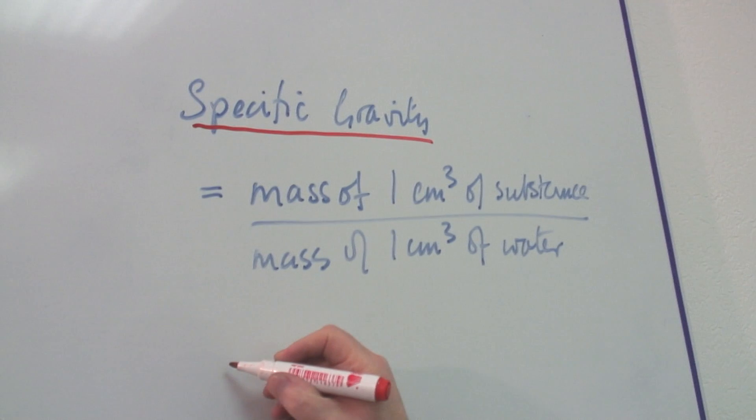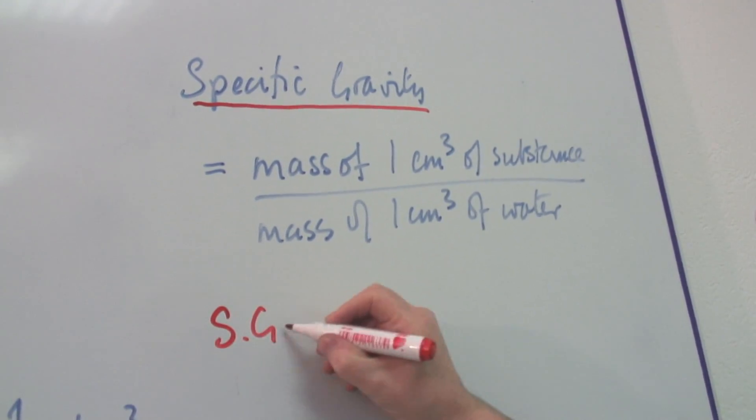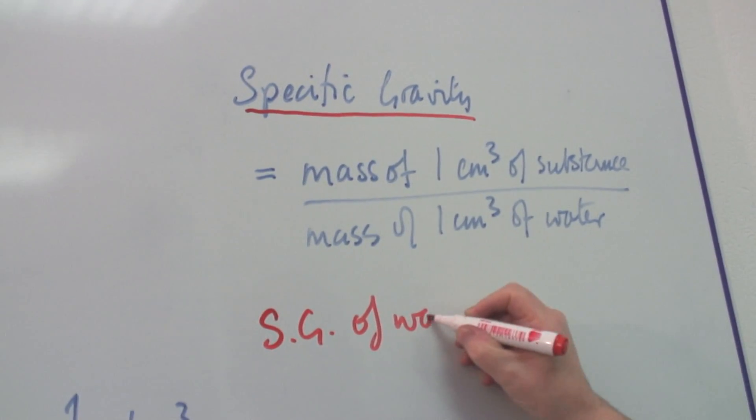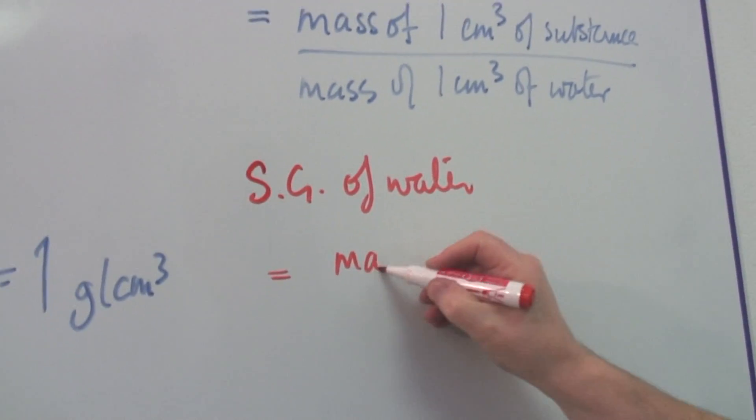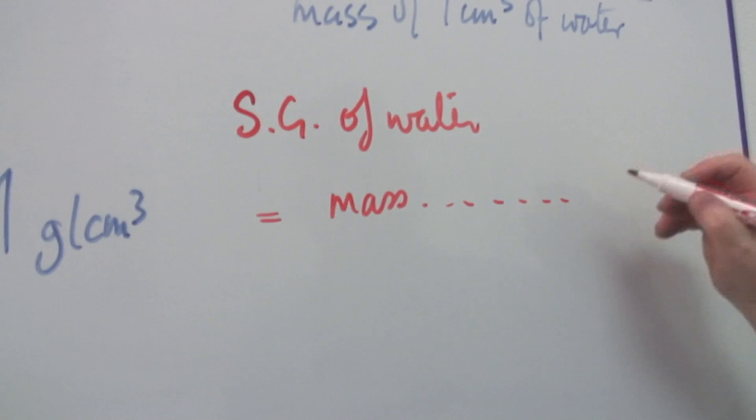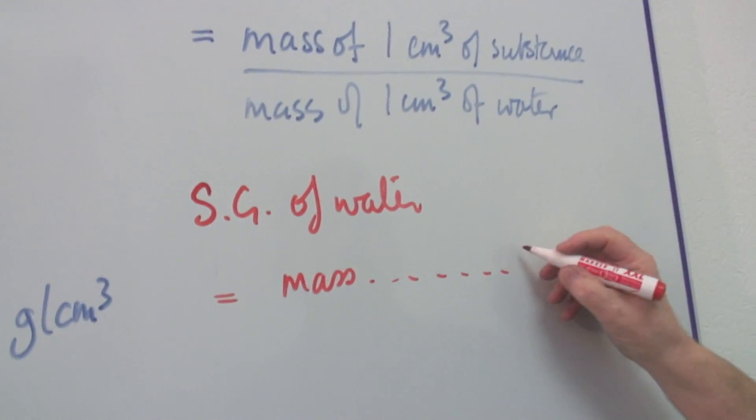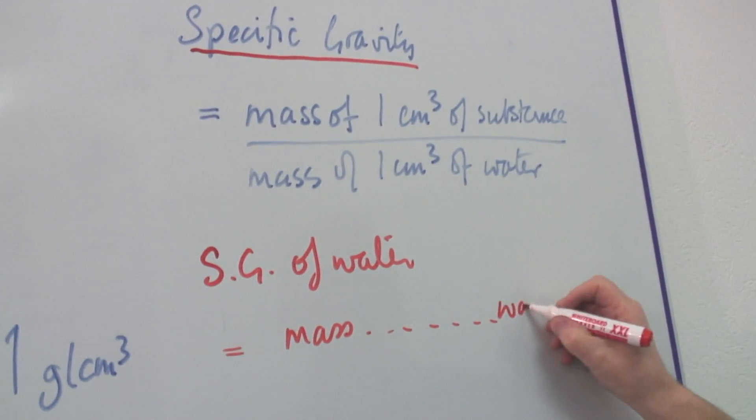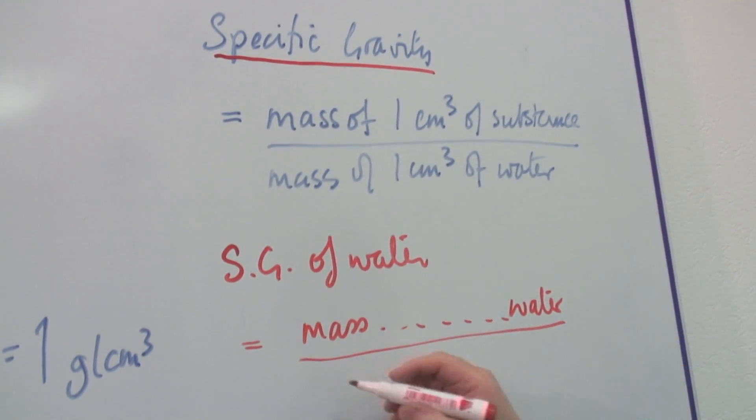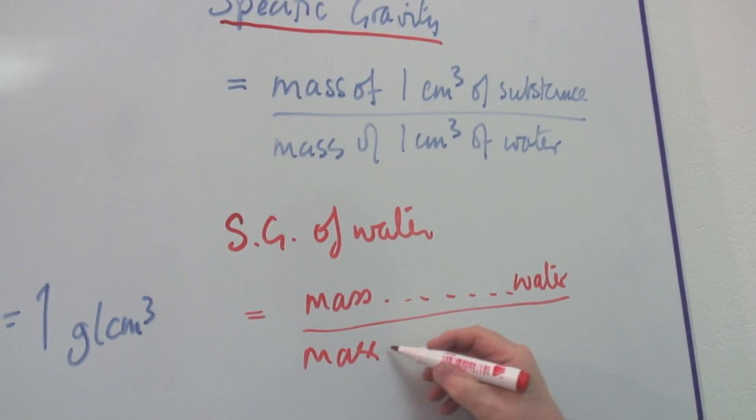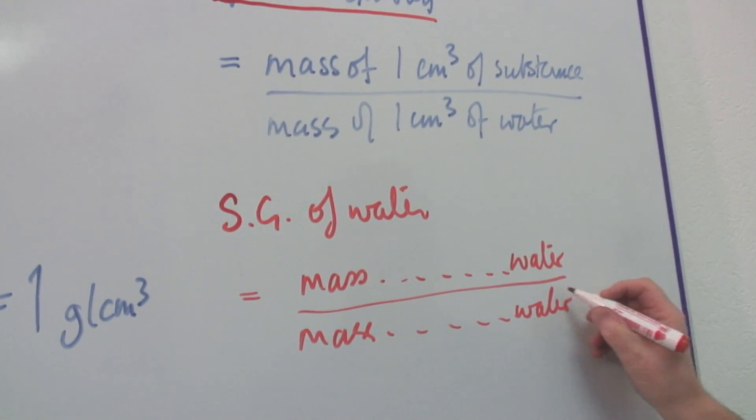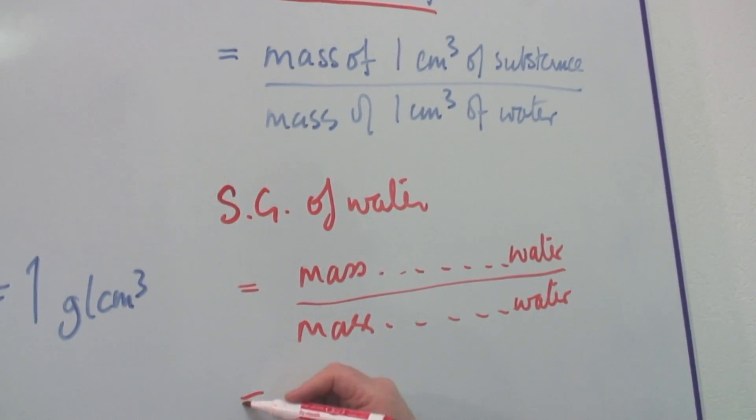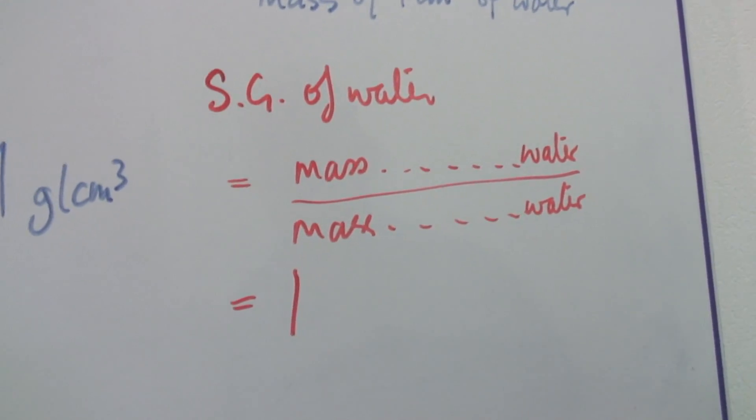So the specific gravity of water is the mass of one centimeter cubed of water divided by the mass of one centimeter cubed of water. And something divided by itself, the answer is one.